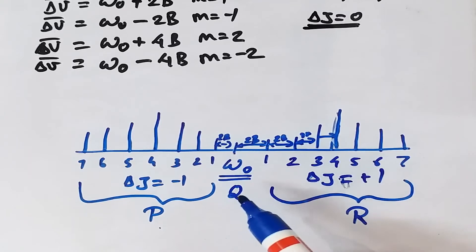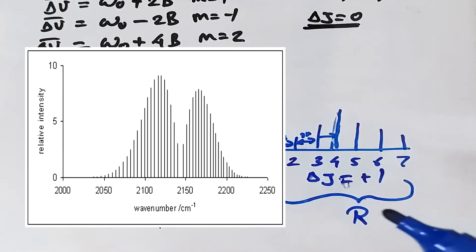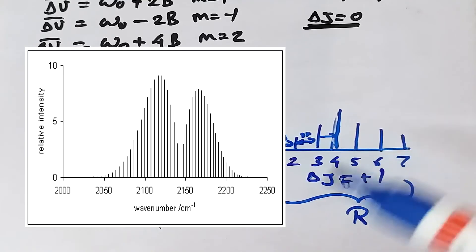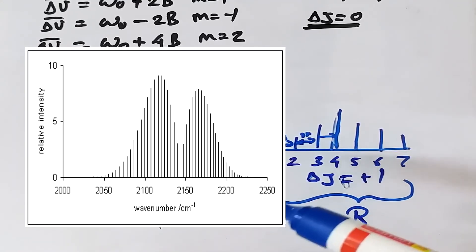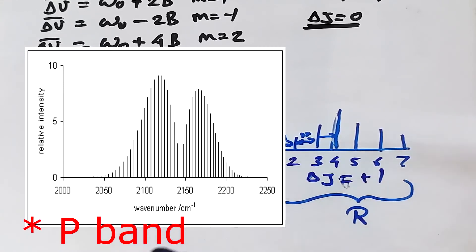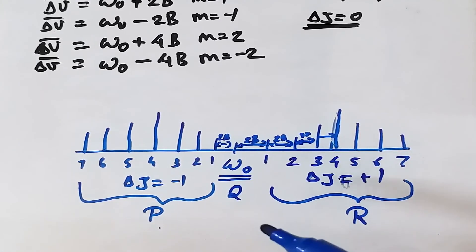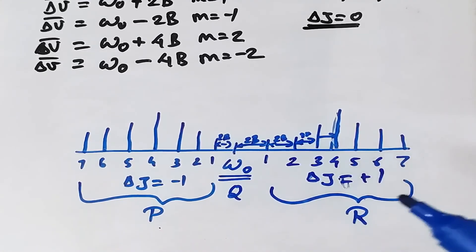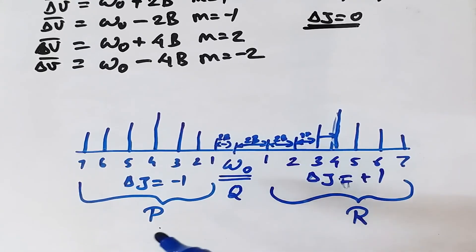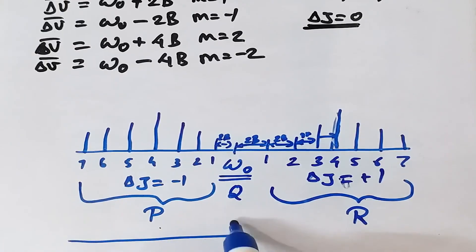A similar rotational-vibrational spectrum of carbon monoxide (CO) is shown, where the fundamental absorption frequency is observed around 2143 cm⁻¹. There is an empty spacing at center (ω₀) corresponding to the forbidden ΔJ = 0 transition, with the R band on the right and P band on the left. An overtone is also observed at around 4260 cm⁻¹, showing the same P-Q-R type band pattern.